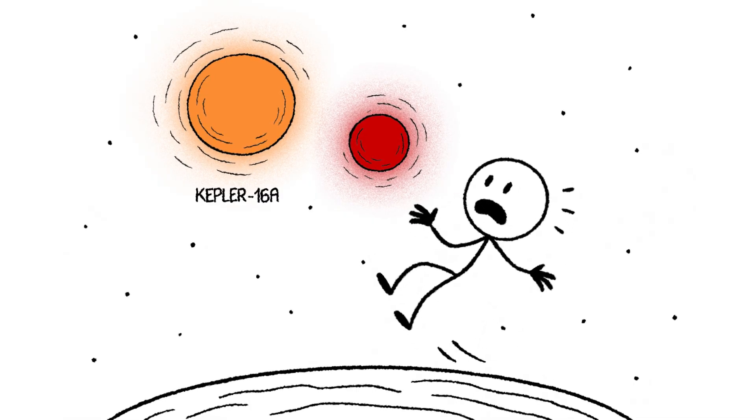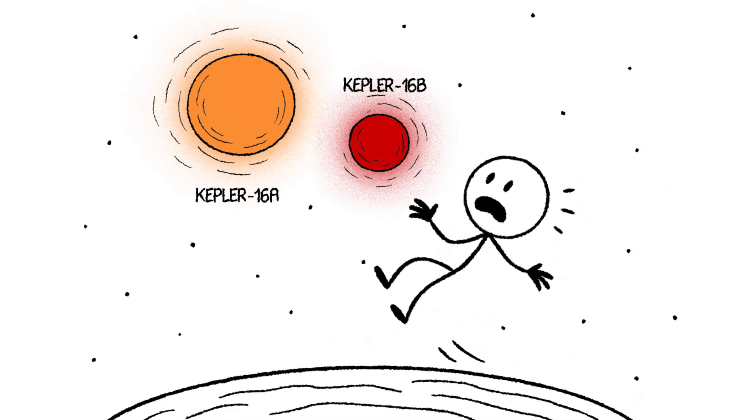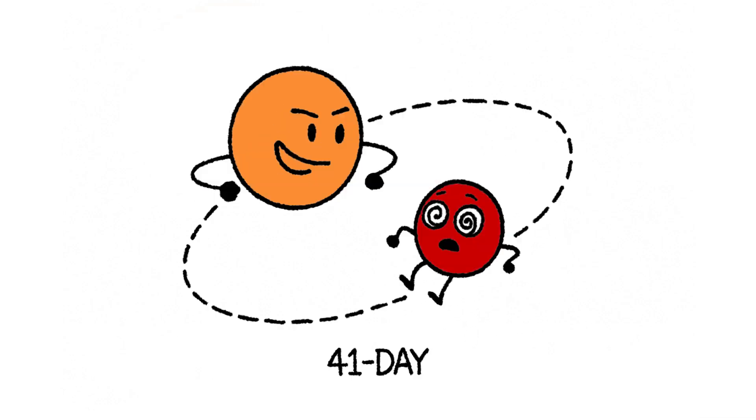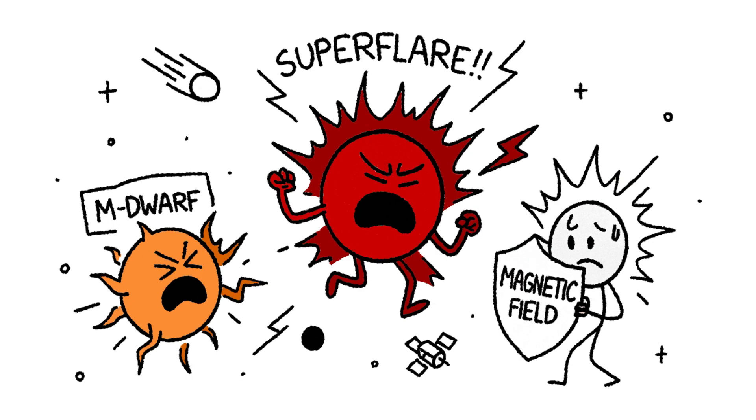That iconic dual sunset is brought to you by a cosmic power couple. Kepler-16a, a standard orange-yellow K dwarf, and Kepler-16b, a small, deep red M dwarf. They are locked in a tight 41-day dance cycle around each other. These stars aren't the calm, goldilocks star we call our sun.